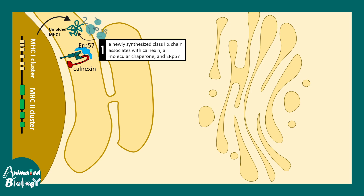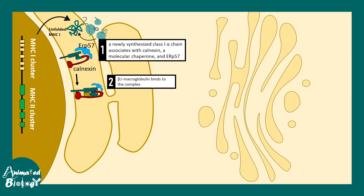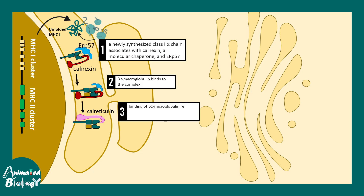Folding is assisted by chaperones like calnexin, along with ERP57 which forms disulfide bonds in the class 1 MHC molecule. These molecules take part in the initial folding process of the class 1 MHC molecule. After the alpha chain is folded, beta-2 microglobulin attaches to this complex. This allows dissociation of calnexin and its replacement with calreticulin. In addition to calreticulin, there is ERP57, tapasin, and the TAP transporter — all of these form a complex known as the peptide loading complex.